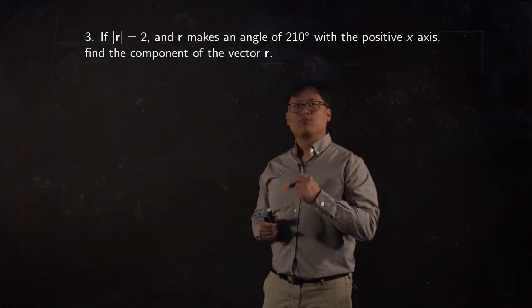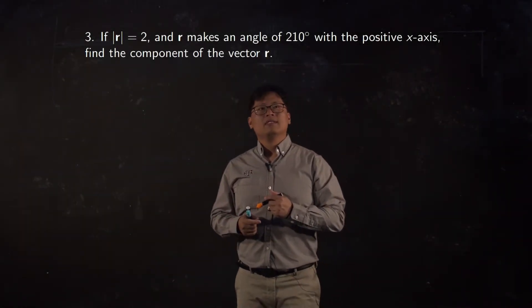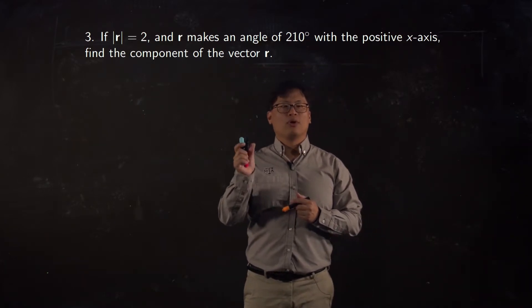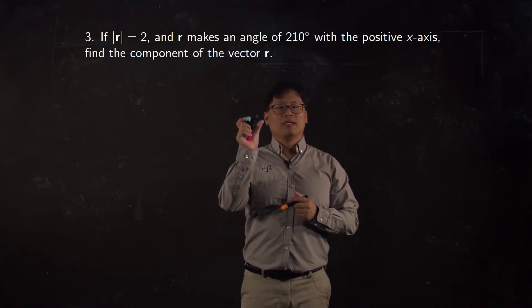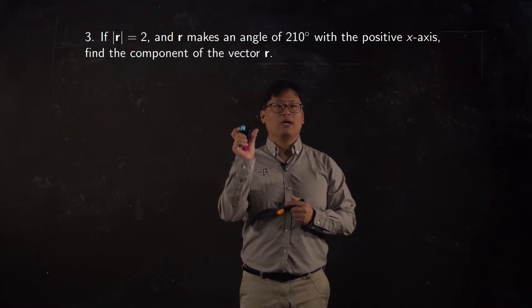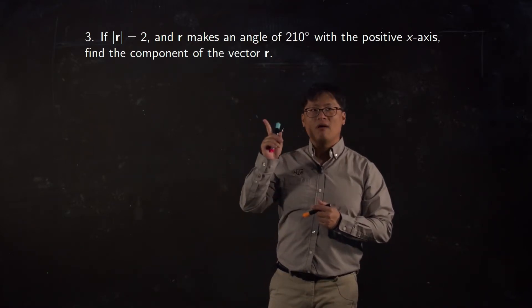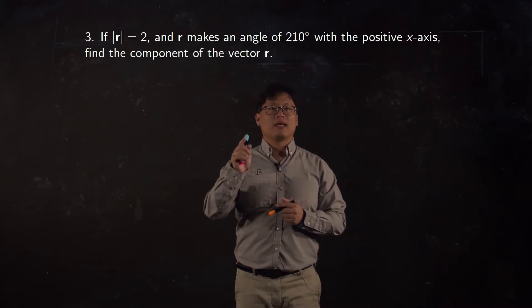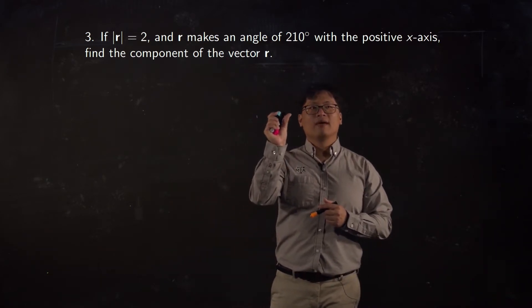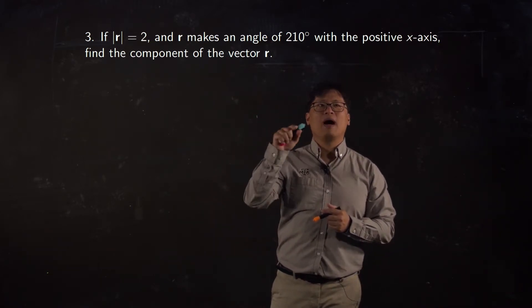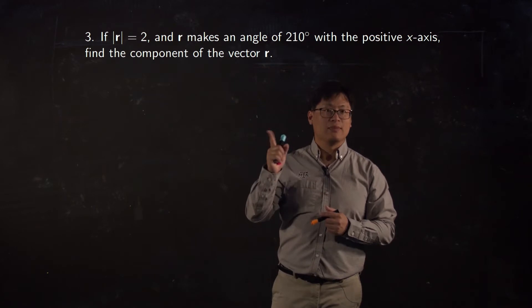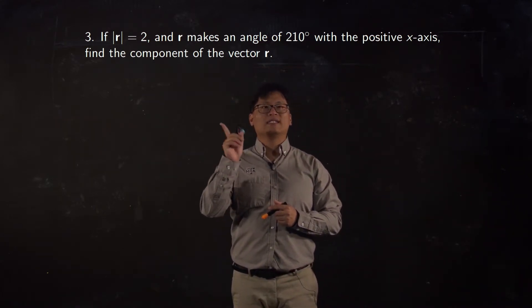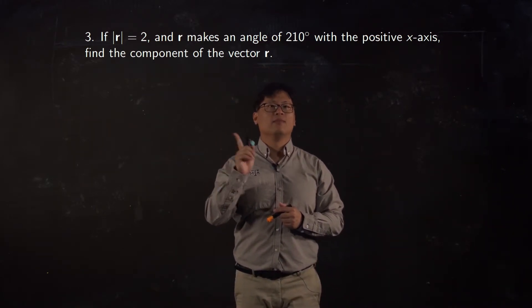Let's talk about this problem. So like in the previous problem, we were working with the component form, but in this problem, your vector r is not written in component form — the length of the vector and the angle from the positive x-axis are given. So we would love to write this vector in component form.